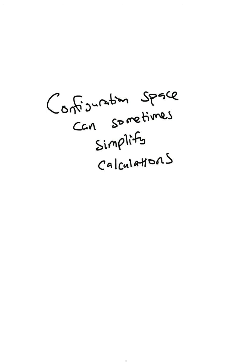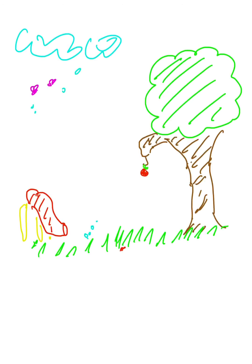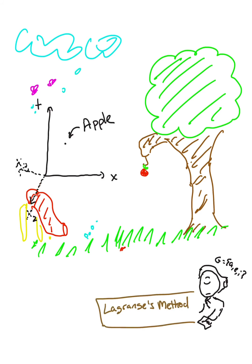Let's see how we can use configuration spaces to solve the same apple-falling problem that perplexed Newton. Joseph Lagrange would describe the apple as a point in configuration space. Since our system, the apple, only contains one object, configuration space will be equivalent to physical space.